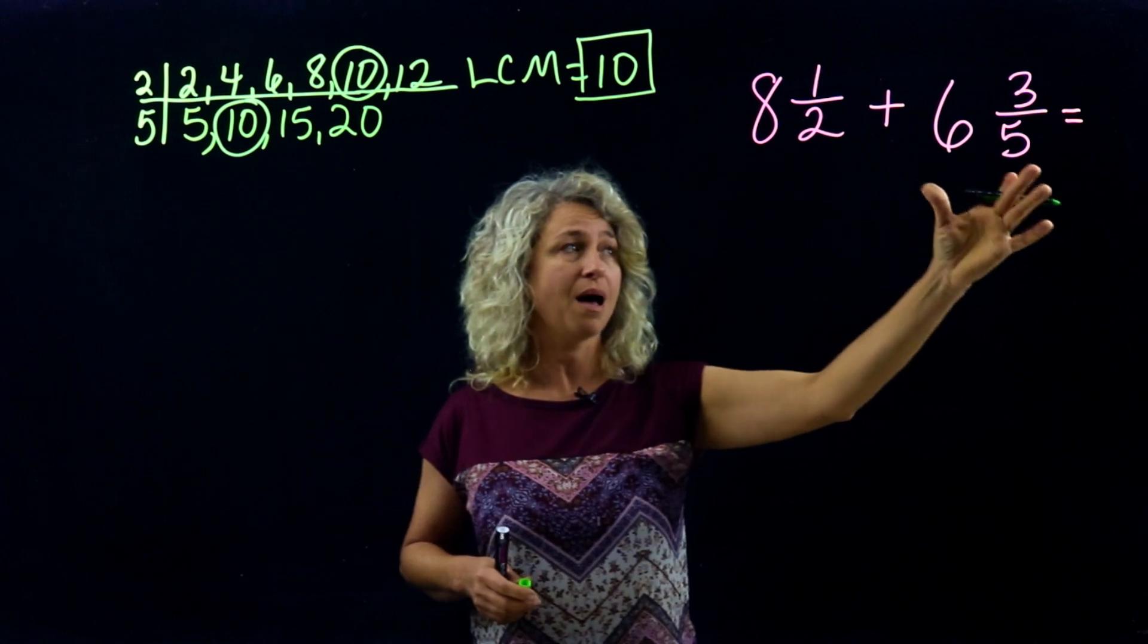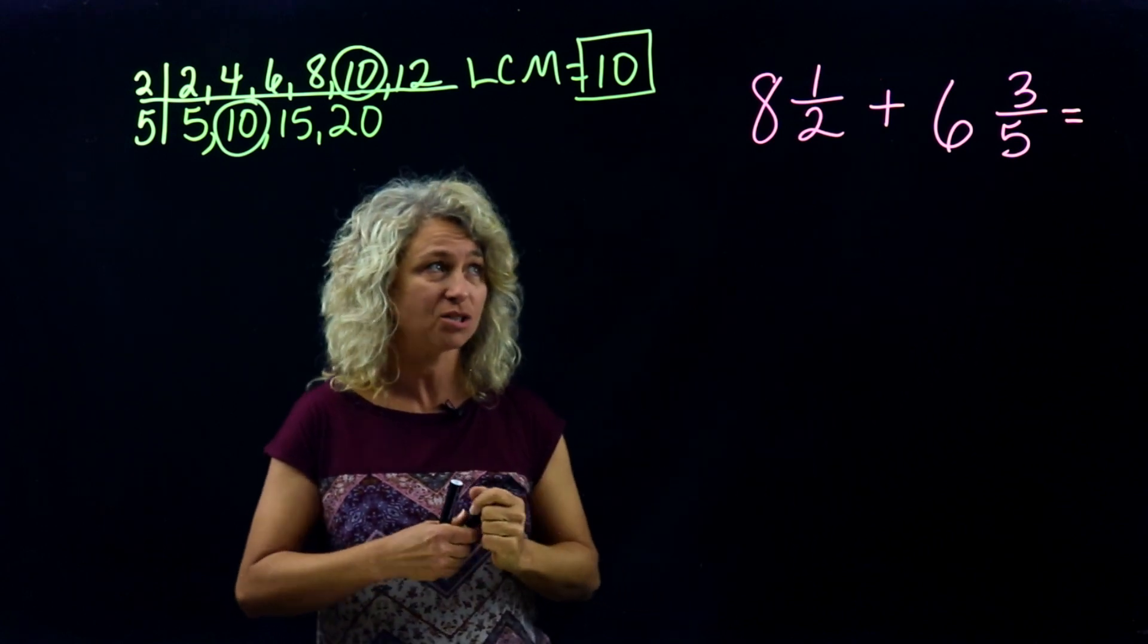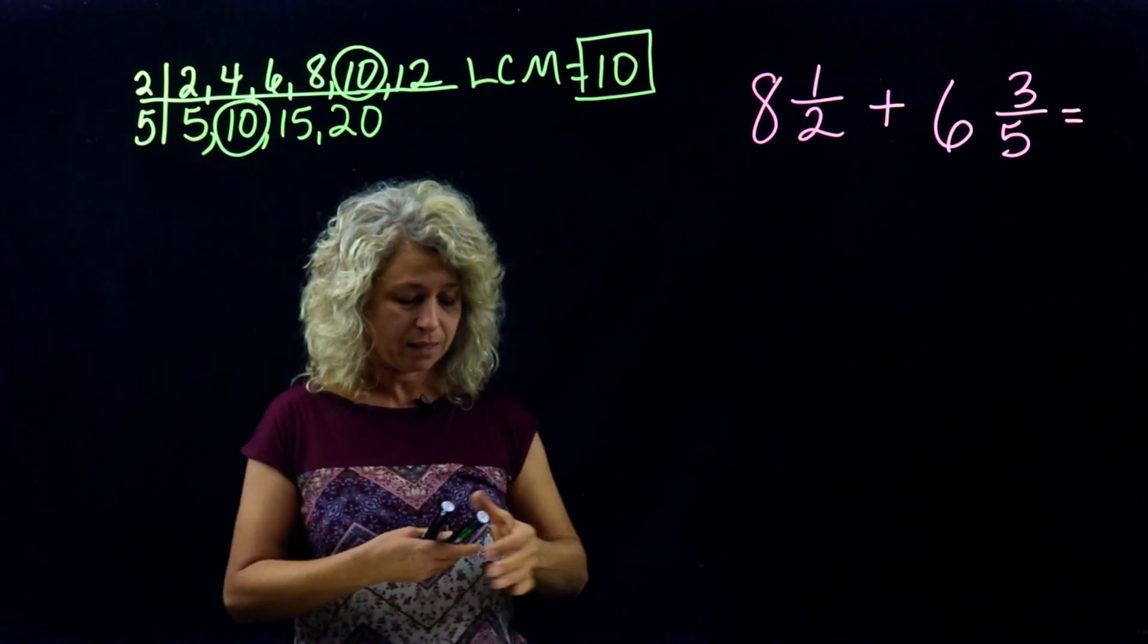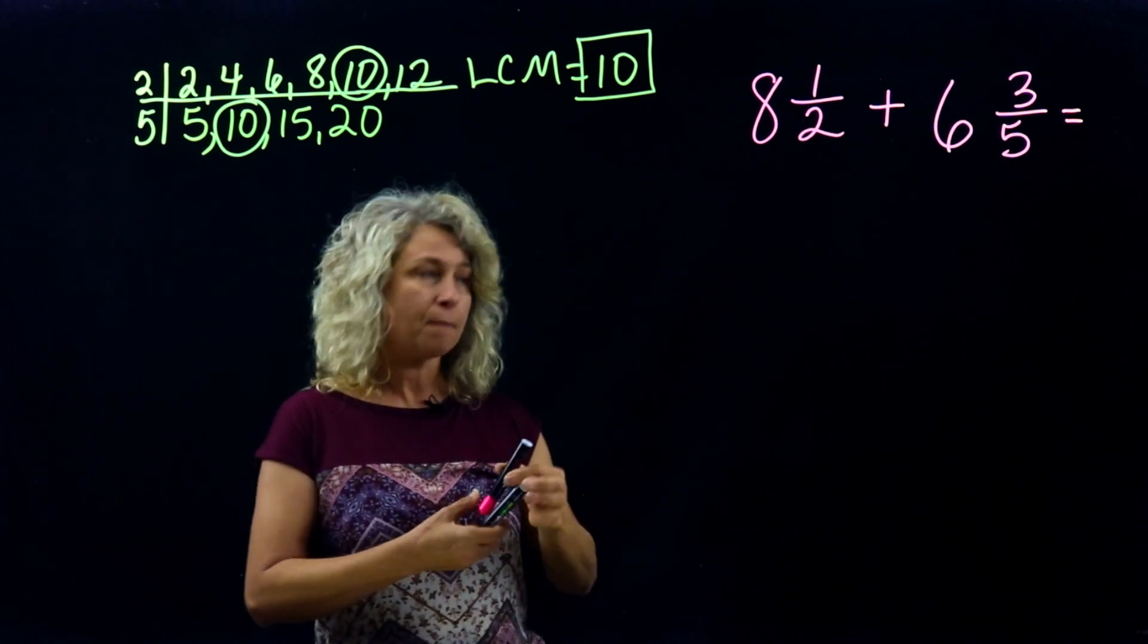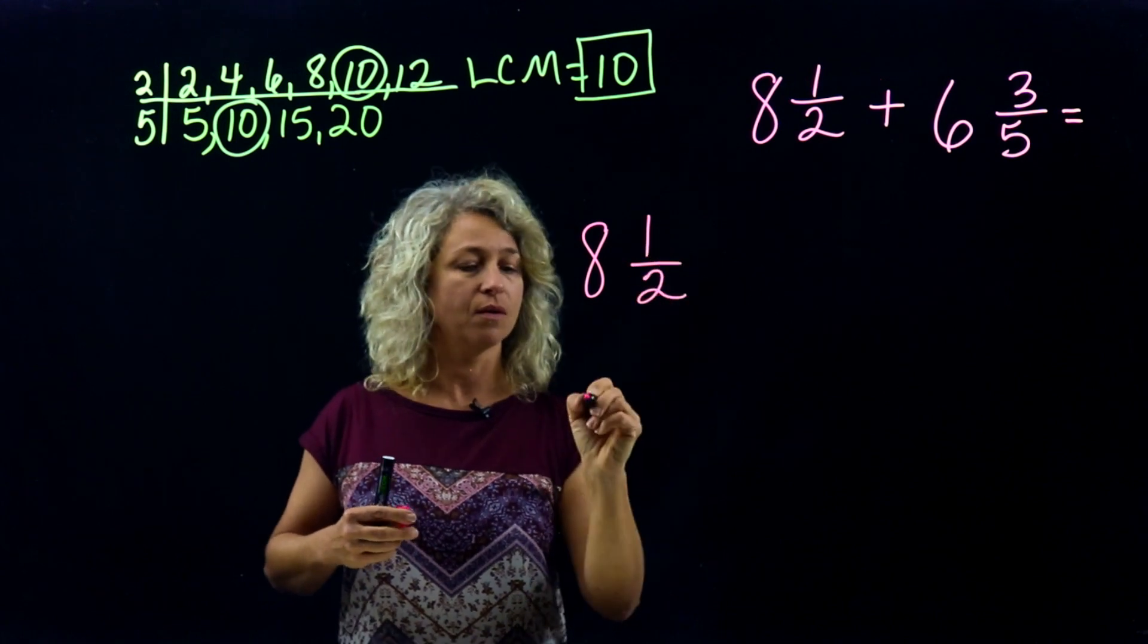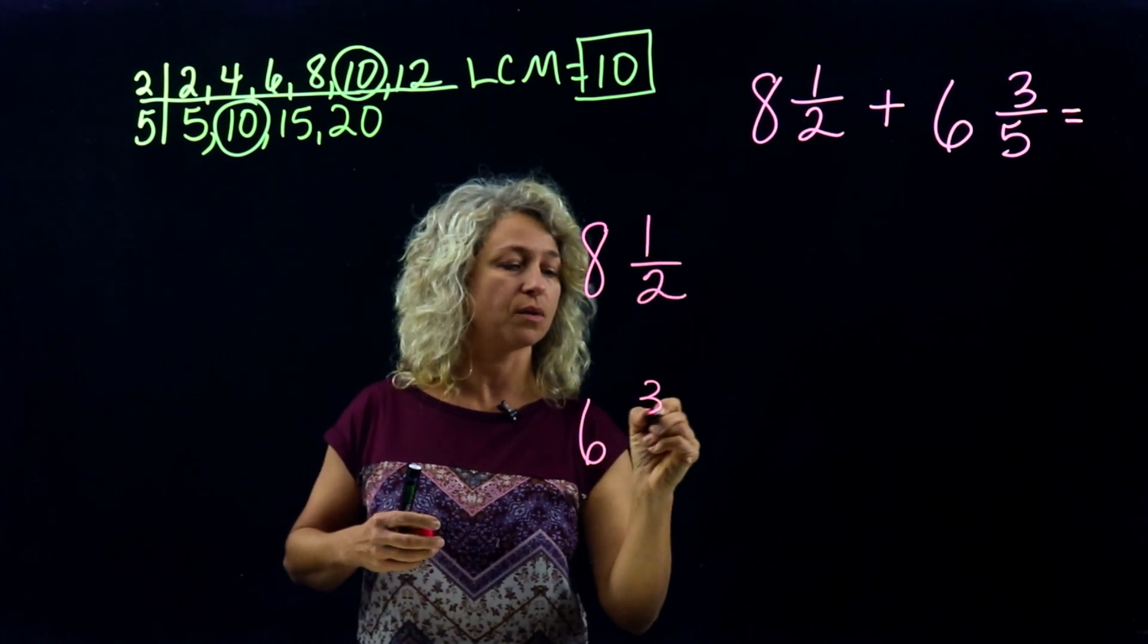So our LCM is 10, and that is going to tell us what the denominator will become when we make equivalent fractions. Alright, so I'm going to rewrite going vertically: 8 and 1/2 and 6 and 3/5.